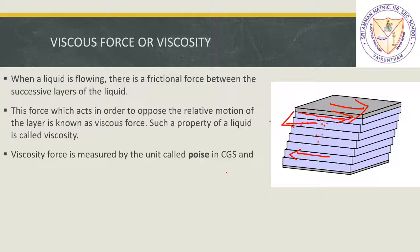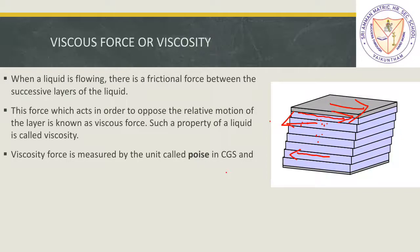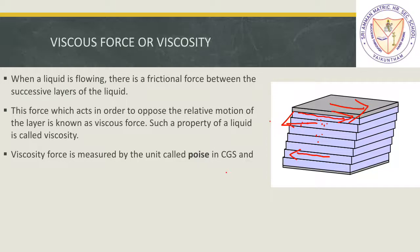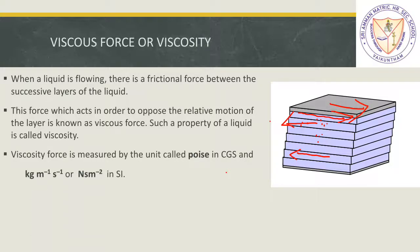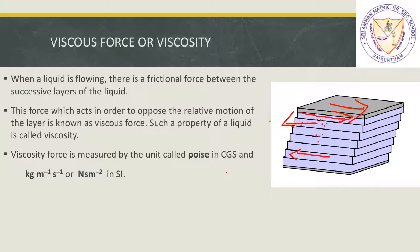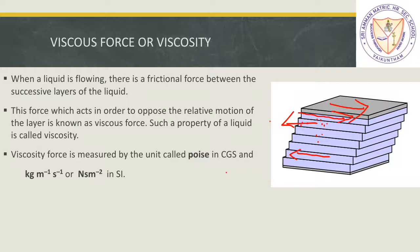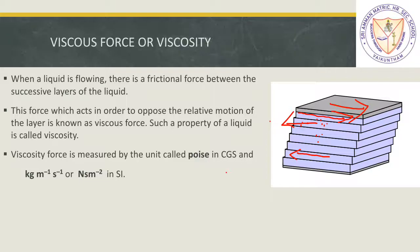The viscous force is measured by the unit called poise in the CGS system — where C stands for centimeter, G for grams, and S for seconds. In the SI unit system, the unit is kg per meter second, or Newton second per meter square. So the SI unit of viscosity is kg per meter second or Newton second per meter square.